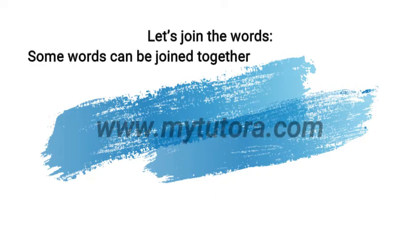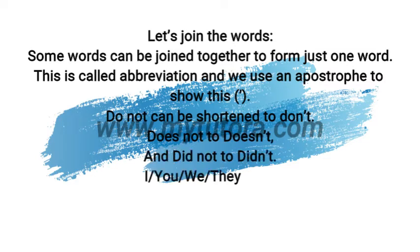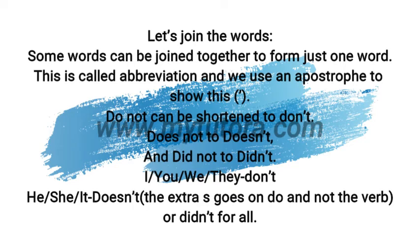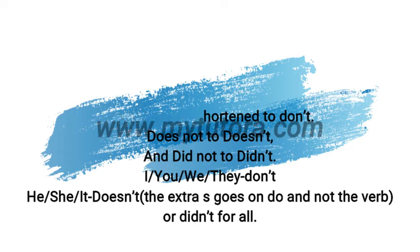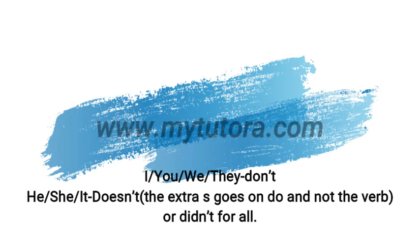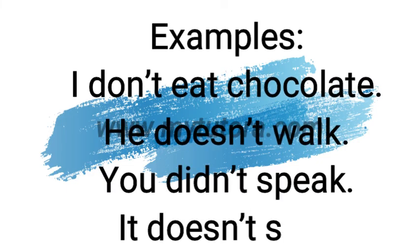Let's join the words. Some words can be joined together to form just one word. This is called abbreviation and we use an apostrophe to show this. For example, do not can be shortened to don't, does not to doesn't, and did not to didn't. For I, you, we, they, we use don't. For he, she, it, we use doesn't. The extra S goes on do and not the verb. Or didn't for all. For example: I don't eat chocolate, he doesn't walk, you didn't speak, it doesn't sink.